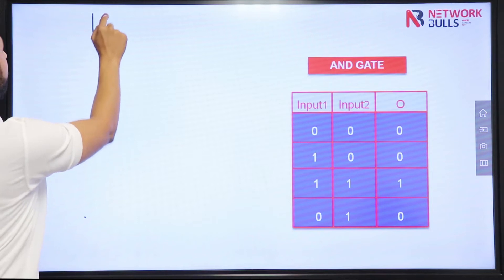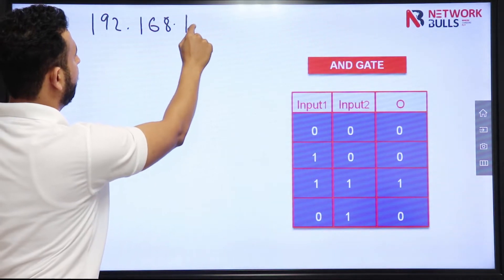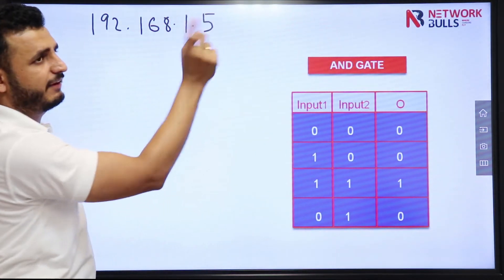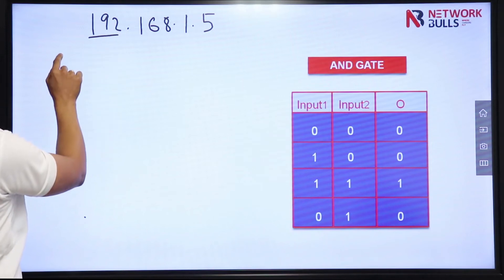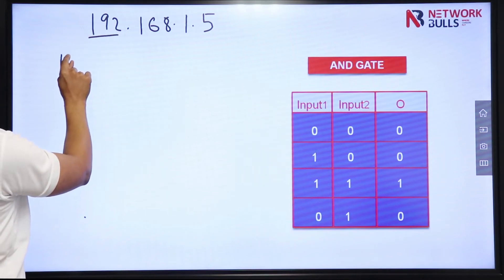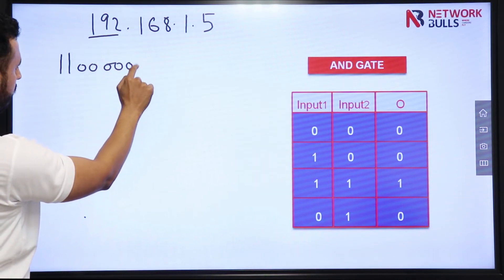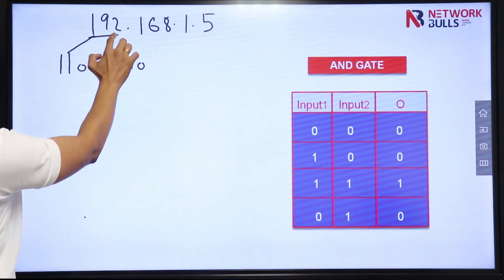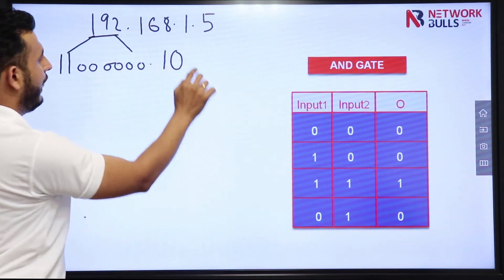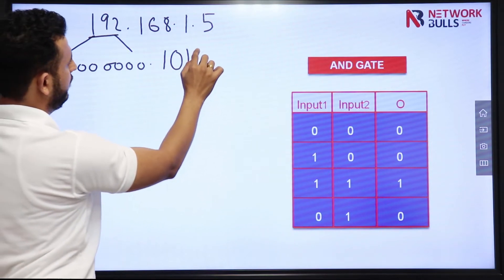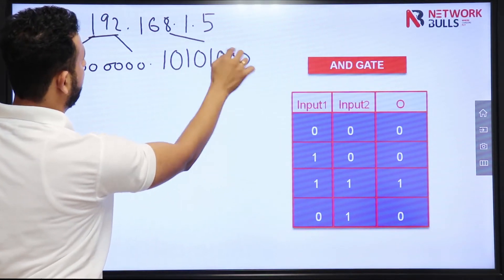My IP is 192.168.1.5. Just convert it to binary. 192 in binary is 11000000. 168 in binary is 10101000. 1 in binary is 00000001. And 5 in binary is 00000101.